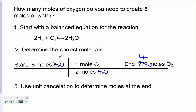We used easy numbers here just for an example — you could have probably done this in your head. But if I had said something that wasn't a nice number, like 5.8 moles of H₂O, how many moles of oxygen would we have? This is a good way to set it up so you don't make any mistakes. This mole-to-mole ratio from the reaction is the heart of our stoichiometry problems.